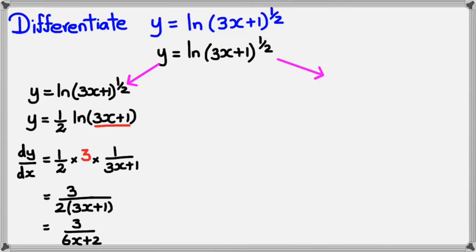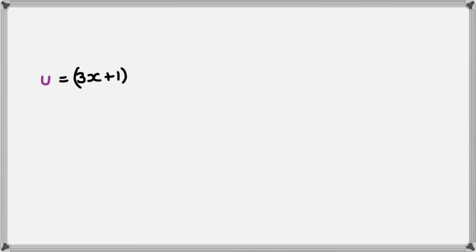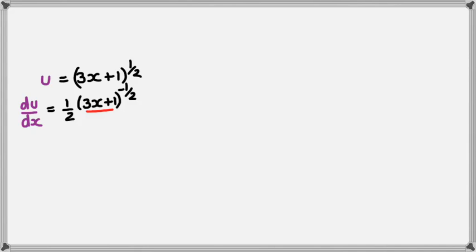That's the easier way. To prove it works, I'll show it using the chain rule — though due to space I'm moving to the next slide. The same question is y = ln(3x+1)^(1/2). I let u = (3x+1)^(1/2), so du/dx = (1/2)(3x+1)^(-1/2) multiplied by 3, from the chain rule.